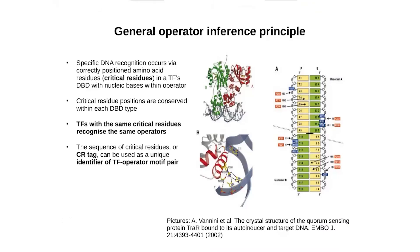Every transcription factor contains a DNA binding domain, which is responsible for nucleic base recognition. Visualized crystallographic data presented on the slide demonstrates that only a few amino acid residues in exact positions are involved in specific interactions with DNA sequence and formation of a stable transcription factor-DNA complex. Amino acid residues in these positions are called critical residues, and one could assume that these positions are conserved within each DNA binding domain type.